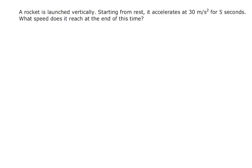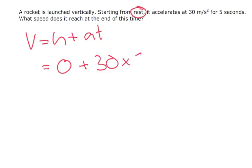A rocket is launched vertically. Starting from rest, it accelerates at 30 metres per second squared for 5 seconds. What speed does it reach at the end of this time? So V equals U plus AT. Starting from rest, so we know this is going to be 0, plus 30 times by 5.